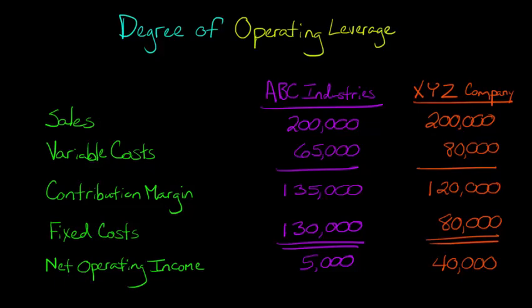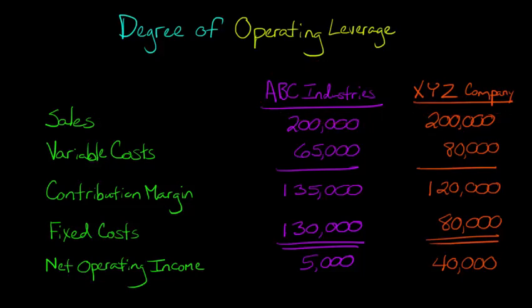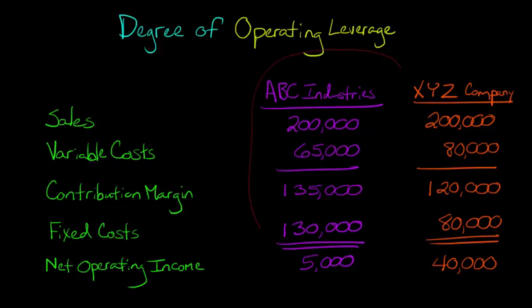Let's say that we were looking at the income statements for two different companies: ABC Industries and XYZ company. We wanted to see if there was a 10% increase in sales — each of them are at $200,000 in sales right now. If sales increased by 10%, what would be the effect on each firm's profitability, the bottom line, net operating income? Is there a way we can predict what that would be without having to build an entirely new set of income statements?